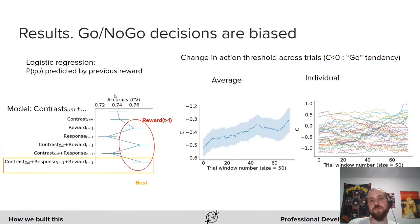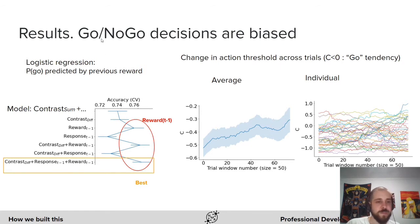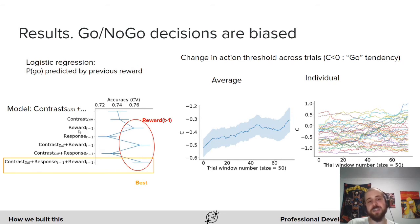One thing we found was that the probability of responding at a given trial was predicted by the reward at the previous trial. We found this by comparing logistic regression models, and our best three models had the reward at the previous trial as a predictor.